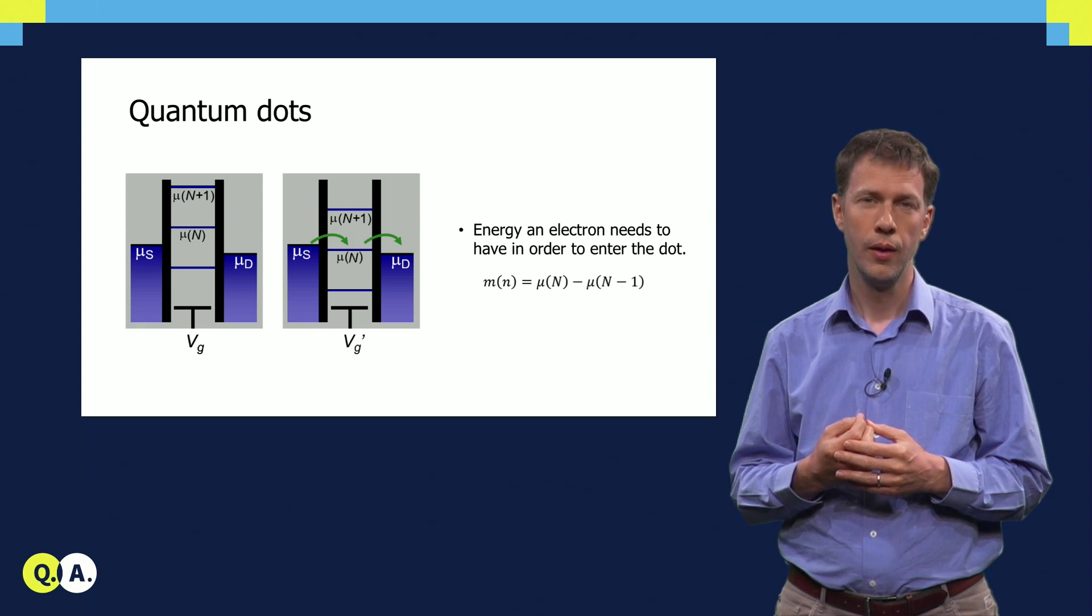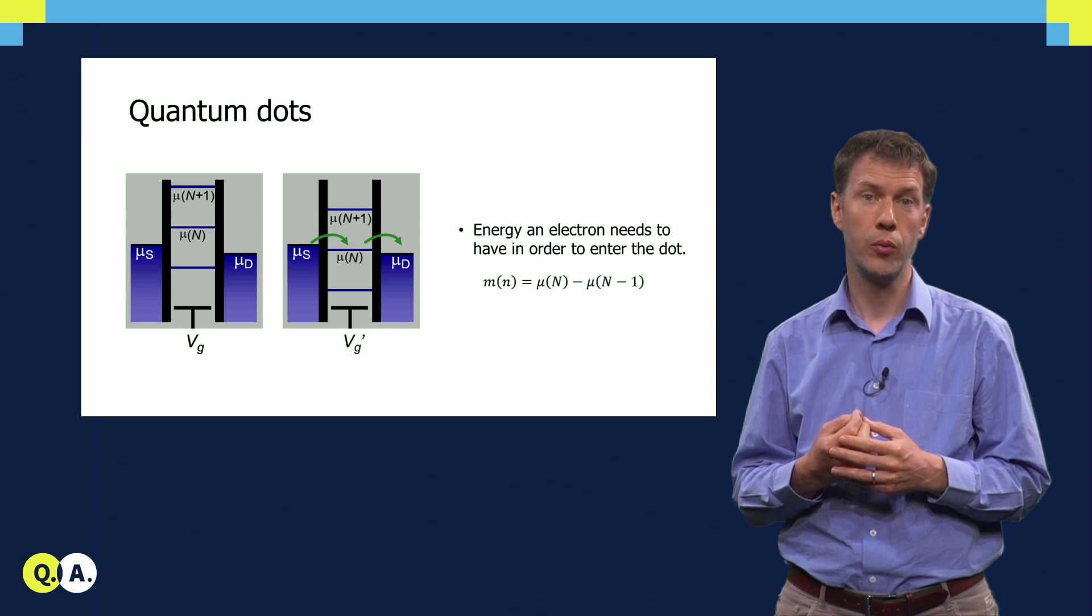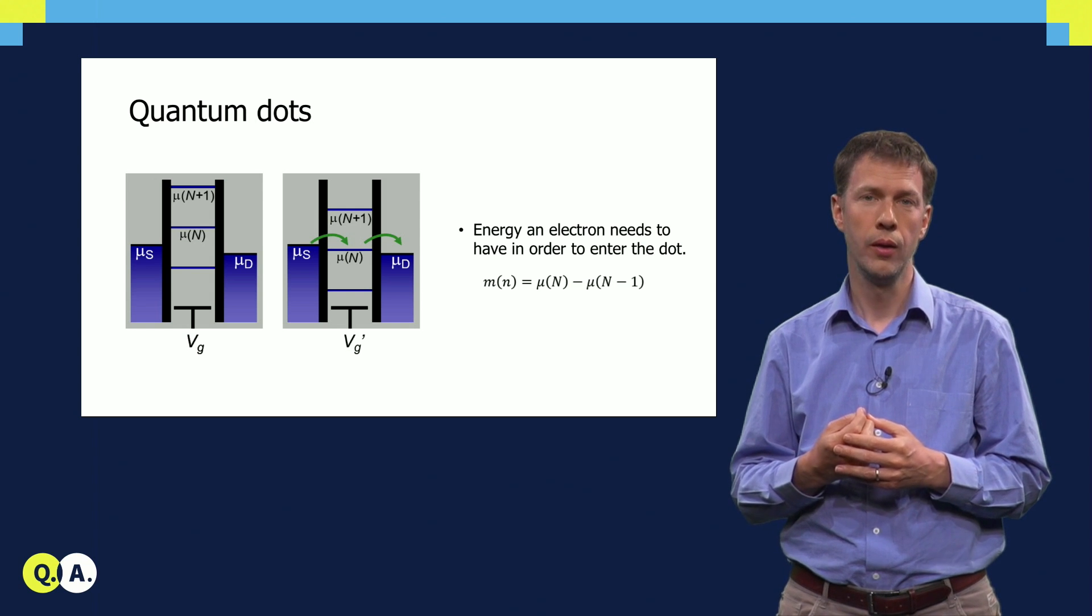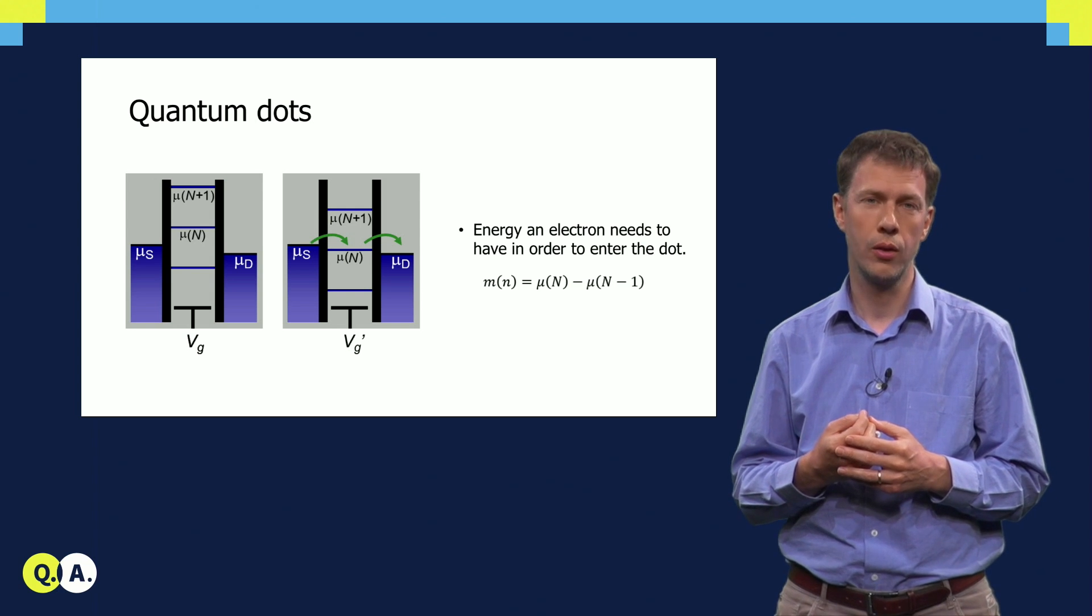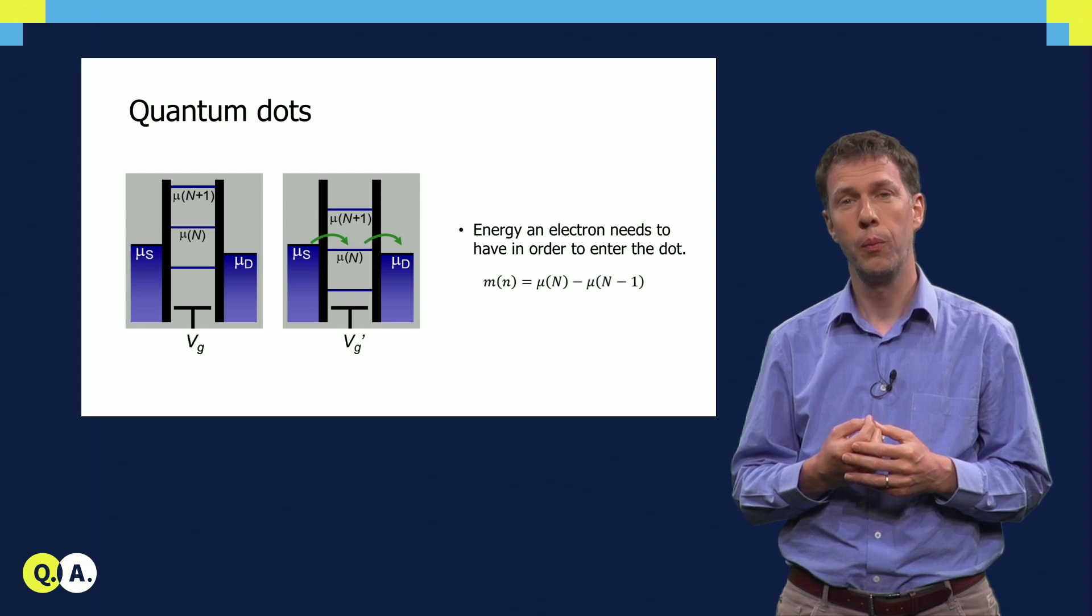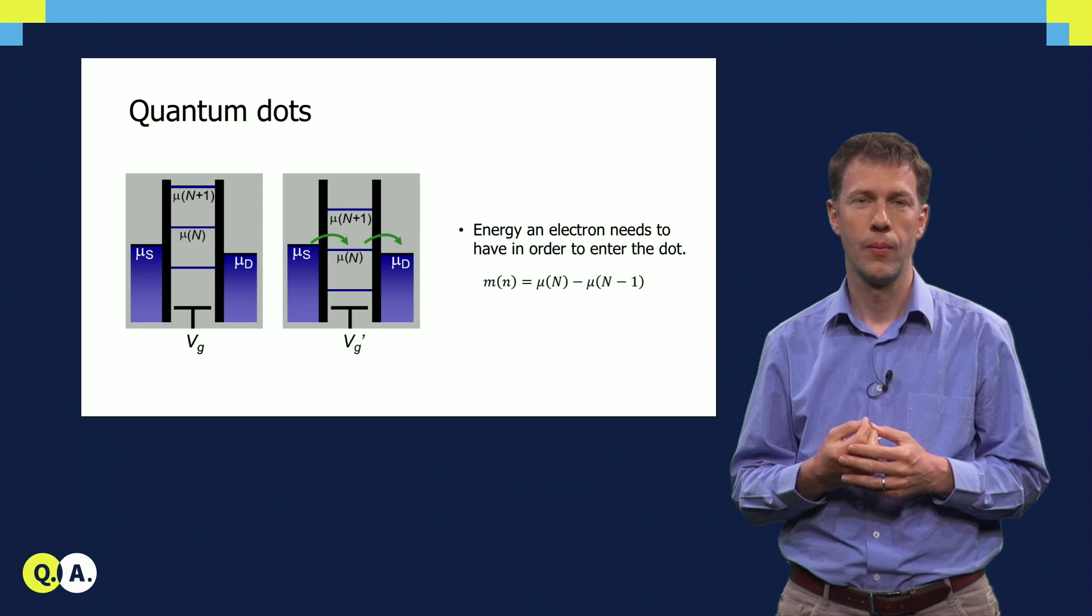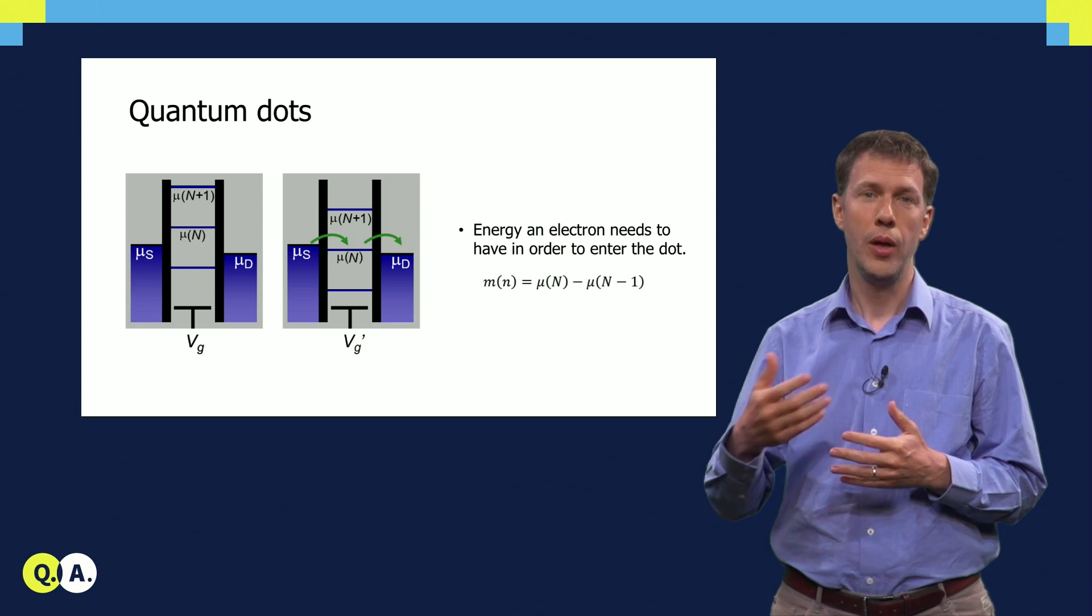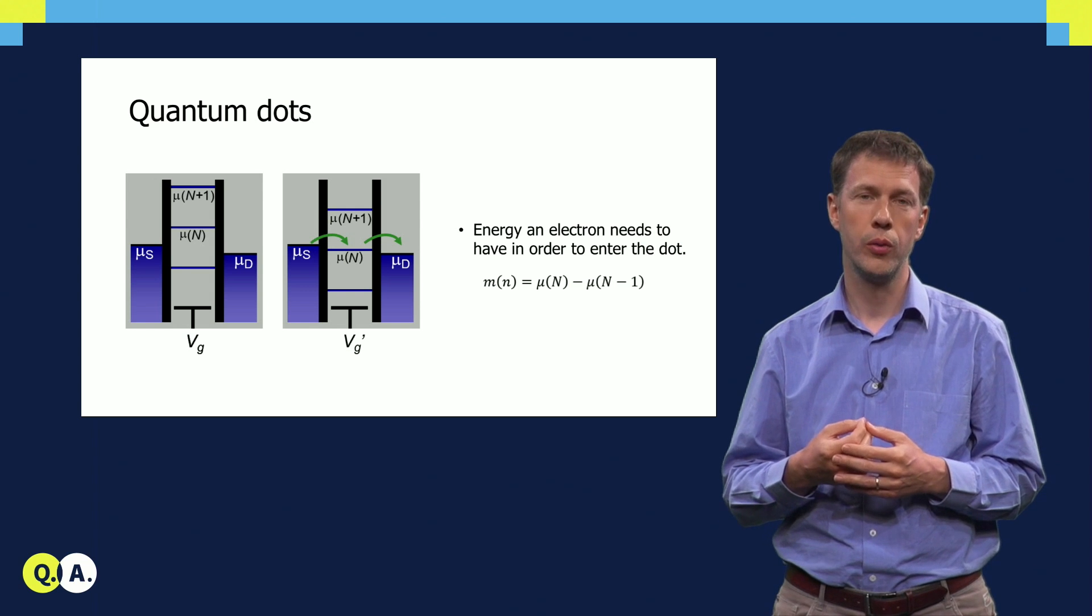In this condition, an electron can move from the source into the island, and then from the island it can move out to the drain. However, before the first electron leaves, no second electron can enter. So individual electrons are really being added one by one as they pass through the quantum dot. But altogether, these many electrons moving through one by one do produce a measurable current.